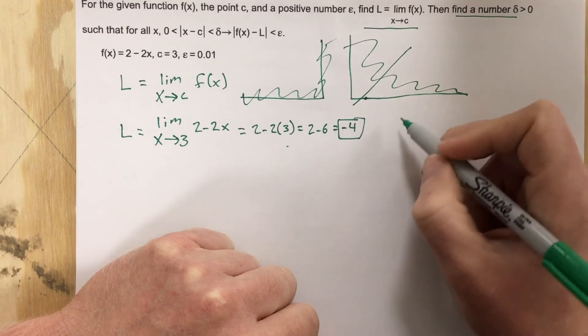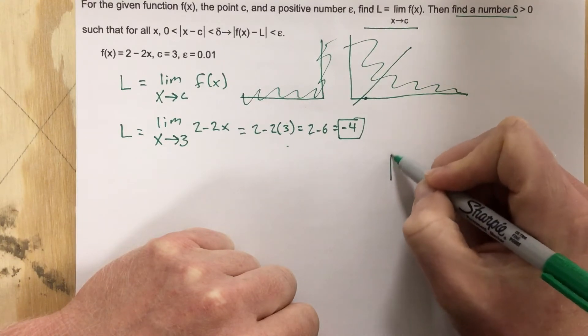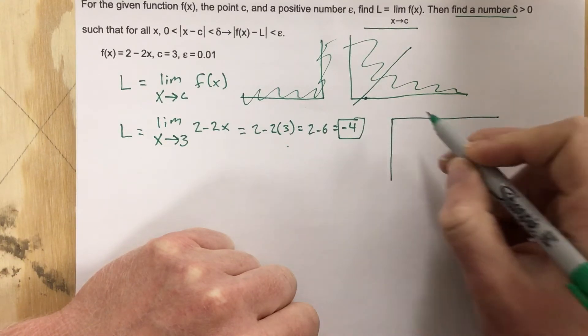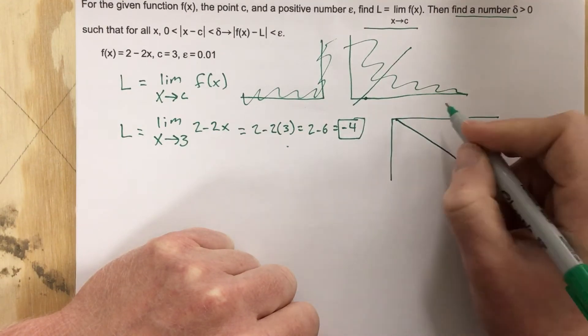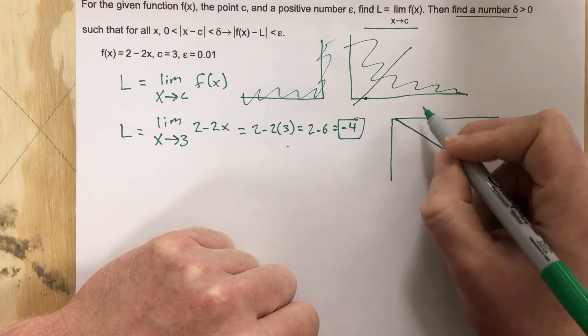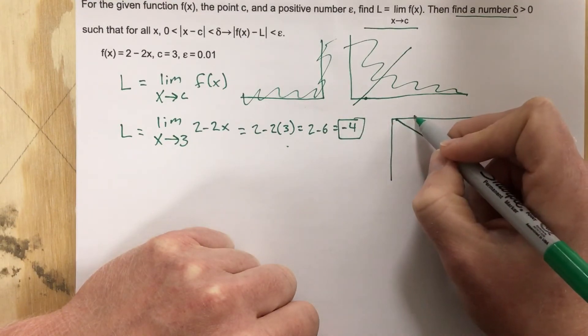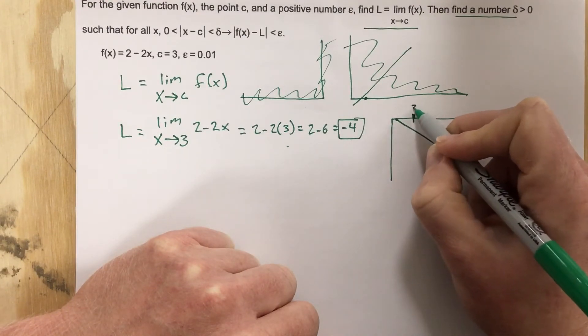This is a limit of negative 4. We're going to be looking like so. We're going to call this the line. And then we're going to name this c is 3. So this is the value of 3.